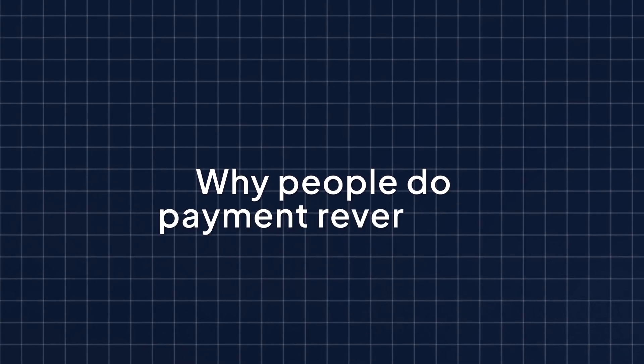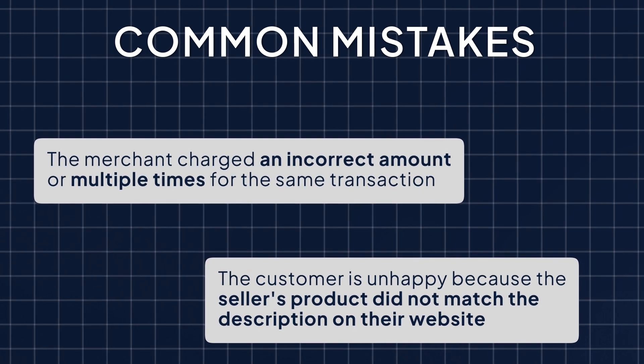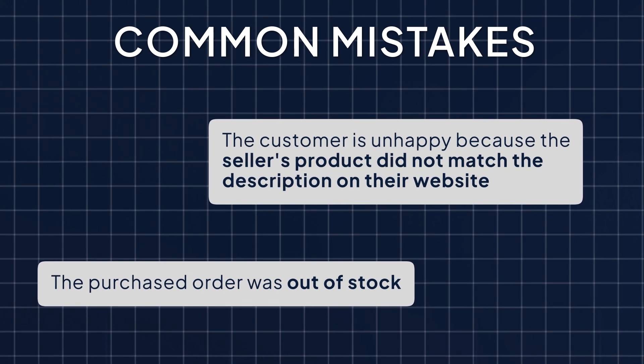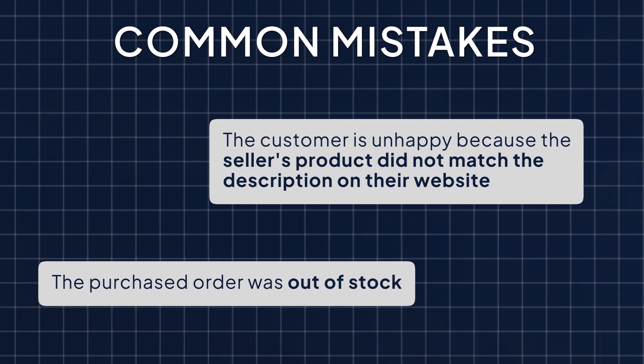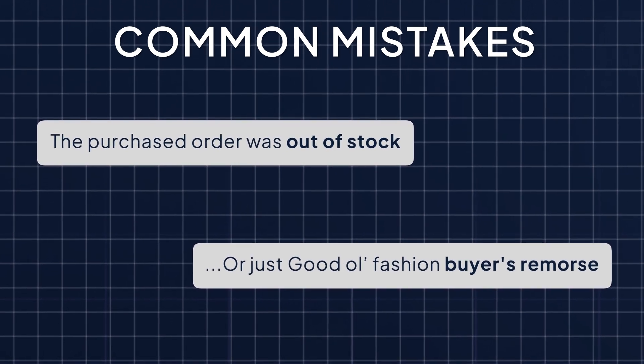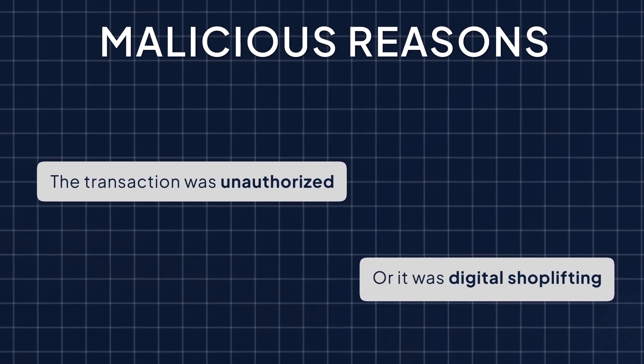So let's dive a little deeper into why people do these payment reversals. Some are completely honest mistakes, others are more malicious. Common honest mistakes include: the merchant charged an incorrect amount or multiple times for the same transaction; the customer is unhappy because the product did not match the description; the purchase order was out of stock; or just good old-fashioned buyer's remorse. More malicious reasons include unauthorized transactions or digital shoplifting.